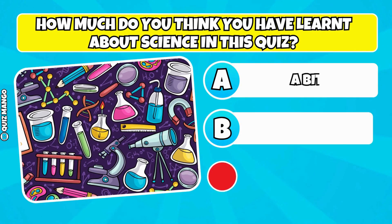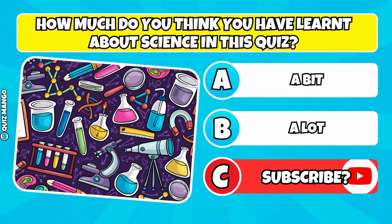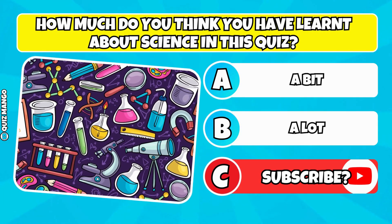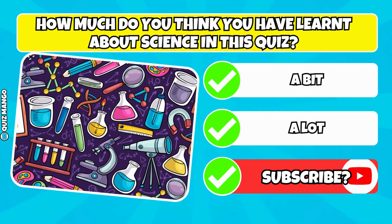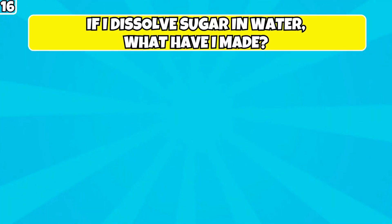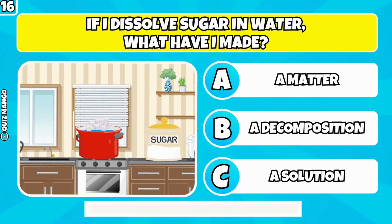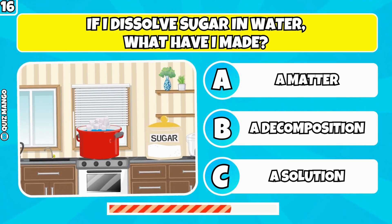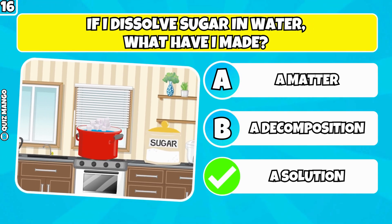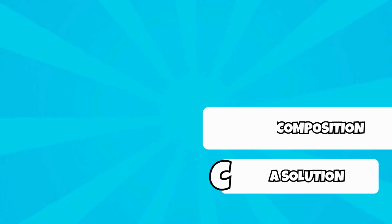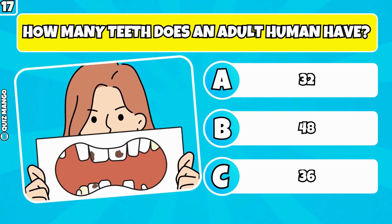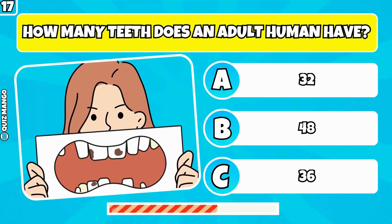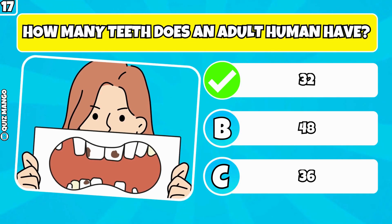Quick question — how much do you think you have learned about science in this quiz? If you have, consider that subscribe button your gateway to even more fascinating knowledge. We greatly appreciate your support. Let's continue. If I dissolve sugar in water, what have I made? A solution. How many teeth does an adult human have? 32 teeth.